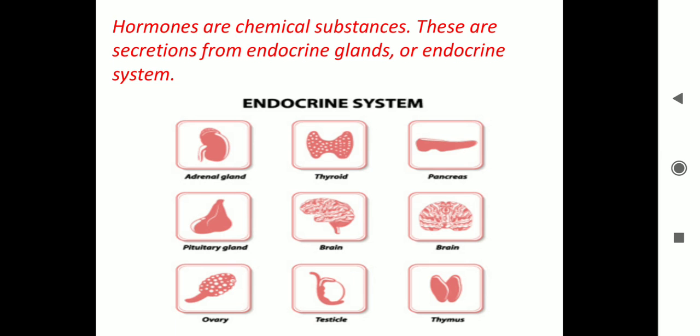The male hormone called testosterone is secreted by the testes at the onset of puberty and causes development of facial hair, chest hair, etc. At the onset of puberty in girls, the ovaries secrete the female hormone known as estrogen, which makes the breasts develop and the mammary glands. This secretion is under the control of the pituitary endocrine gland.